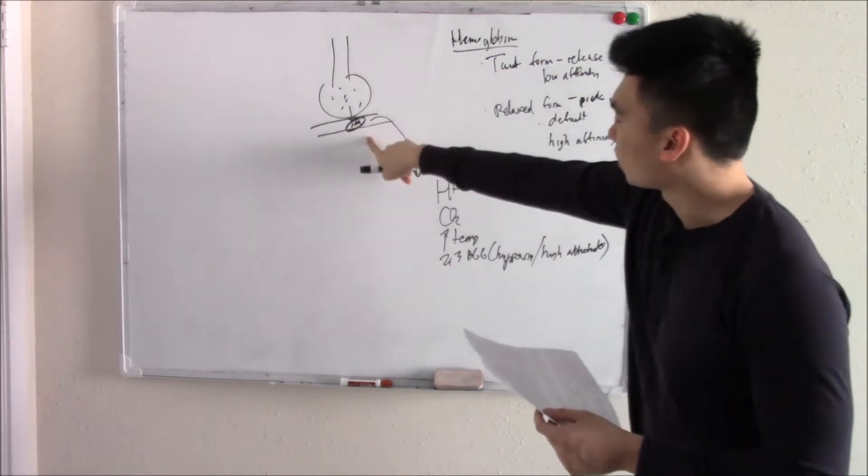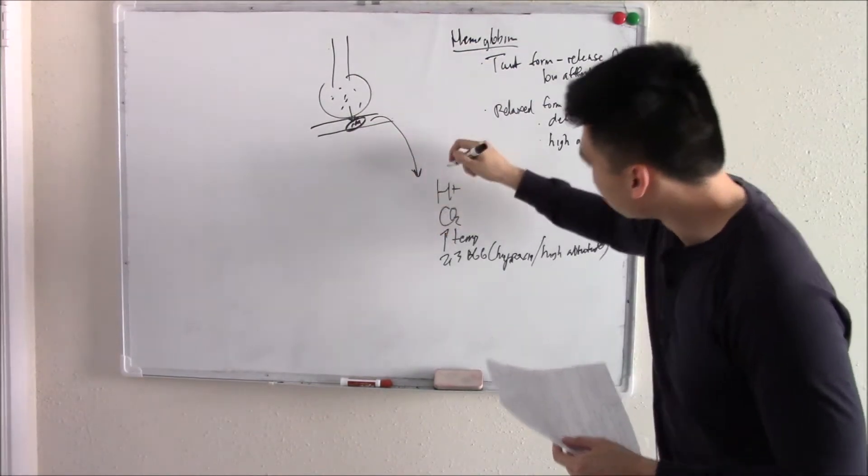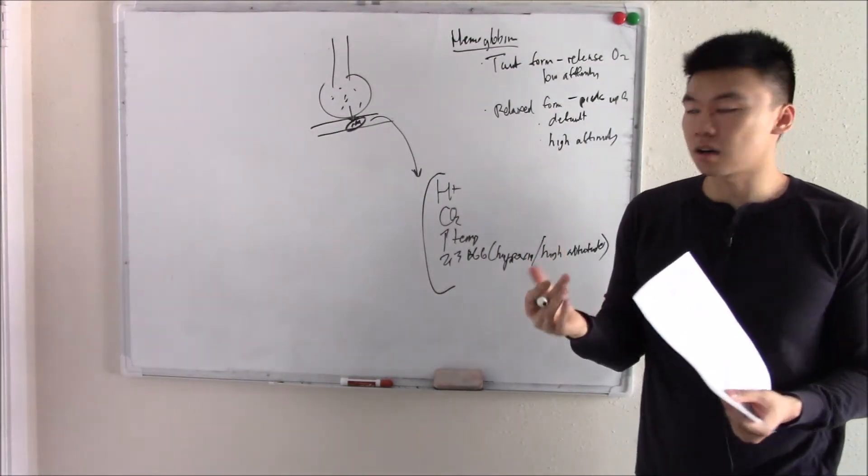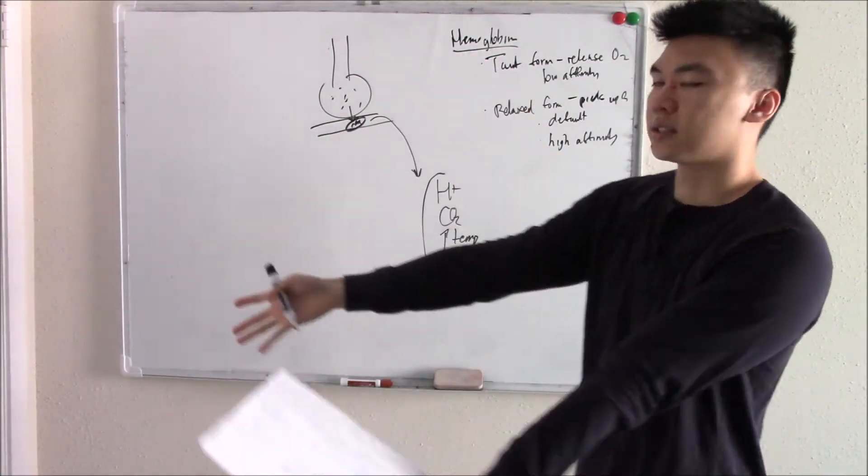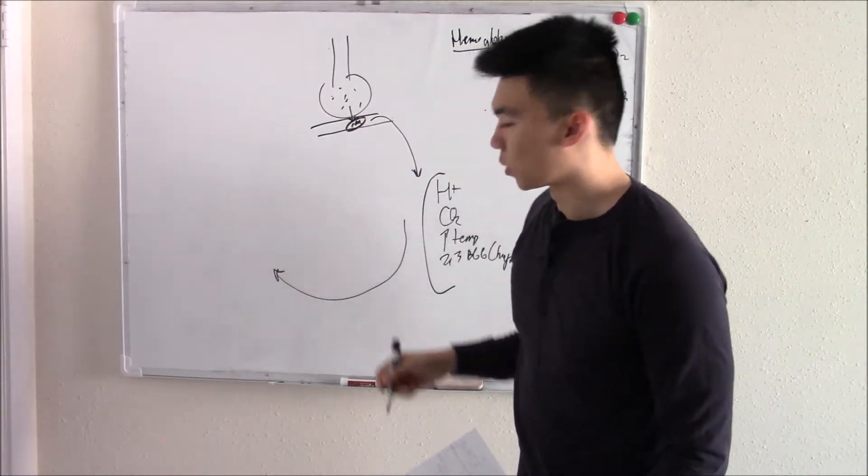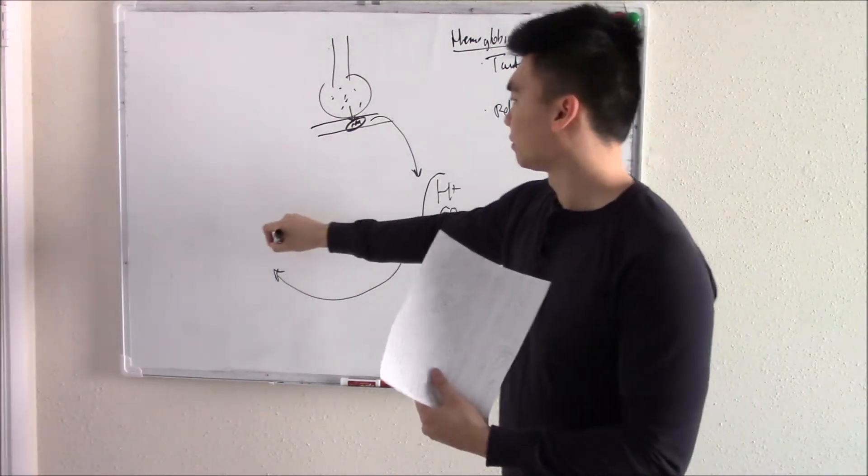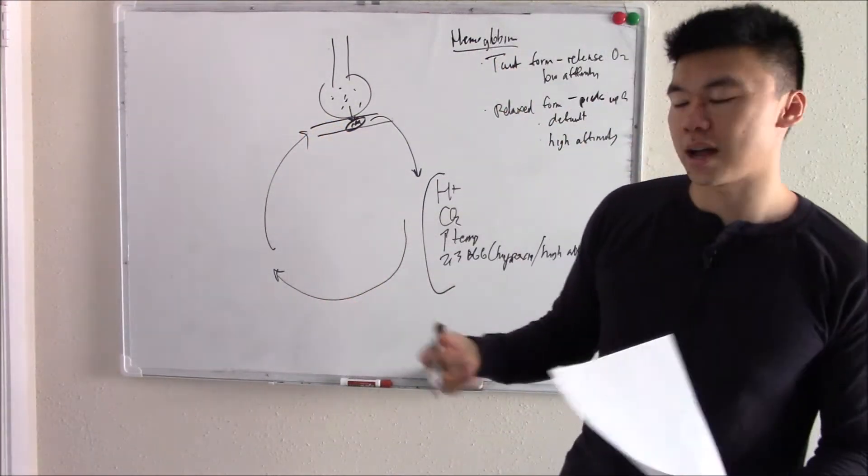So your red blood cells in its relaxed form will pick up oxygen, go to this tissue, see all these chemical mediators and say, oh no, this tissue really needs oxygen. Turn into its taut form, release that oxygen. And then once it leaves these chemical mediators, it will turn back to its default form, turn back to its relaxed form, start to cycle over again.